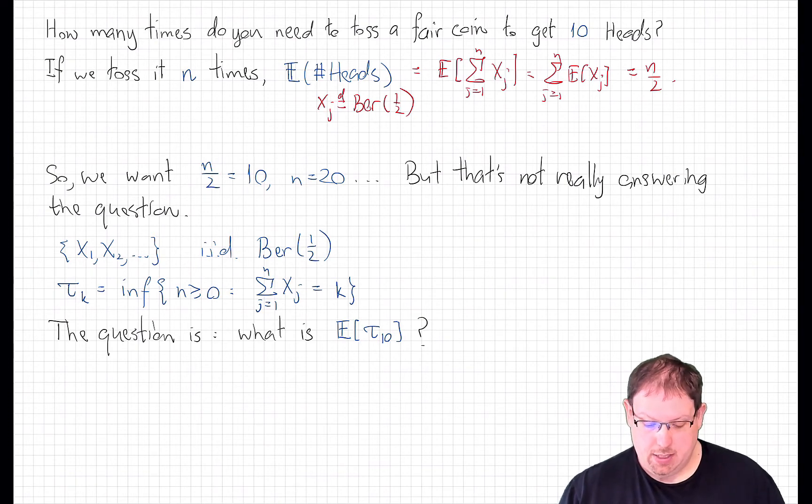So it seems that we can answer this question by saying we want to choose n so that n over 2 is 10, meaning 20 tosses to get 10 heads. But is that really a rigorous argument? Not the way that the question is stated.